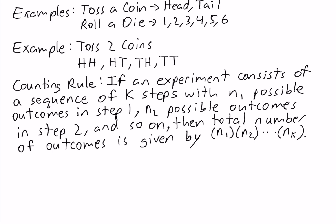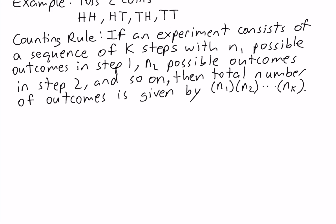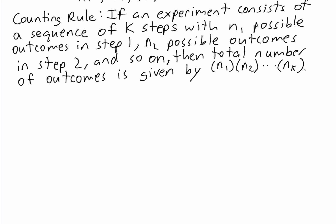Let's use this counting rule to calculate how many outcomes there are in our example where we're tossing two coins. We already listed the outcomes and saw that there are four, so our answer should be equal to 4.